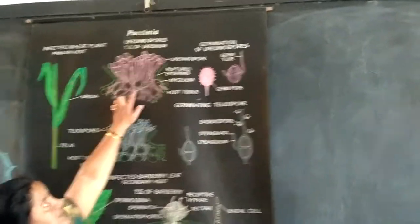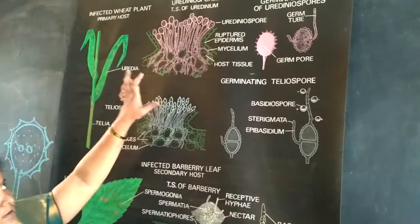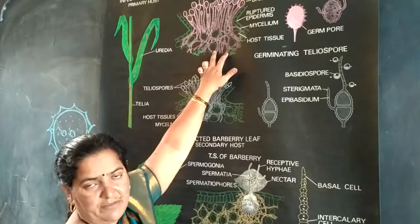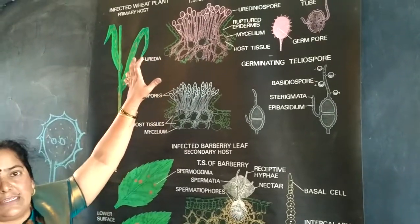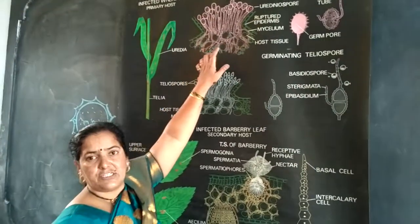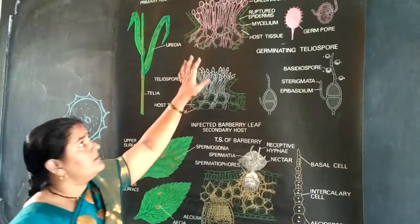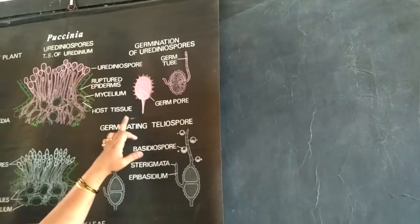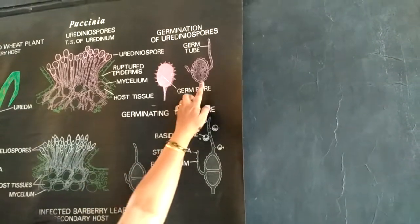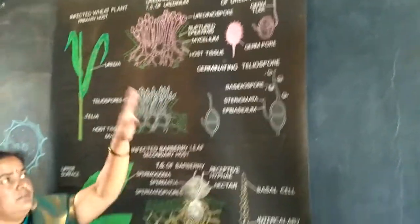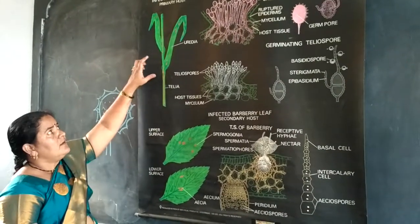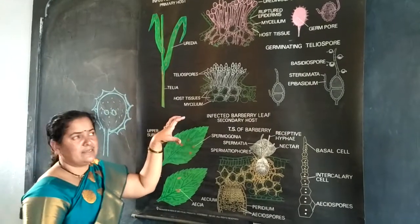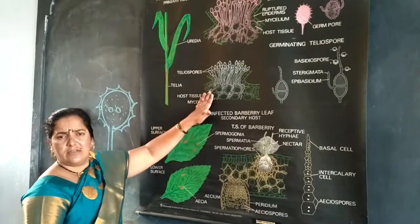When uredospores occur in a group and come outside by rupturing the epidermis of the leaf, that structure is called a uredial pustule. This uredial pustule is orange in color. After maturation, the uredospores are liberated outside and germinate. Germ tubes emerge from the germ pores, and when these uredospores come in contact with the leaf of the primary host in favorable climatic conditions, they germinate and produce the telial stage.